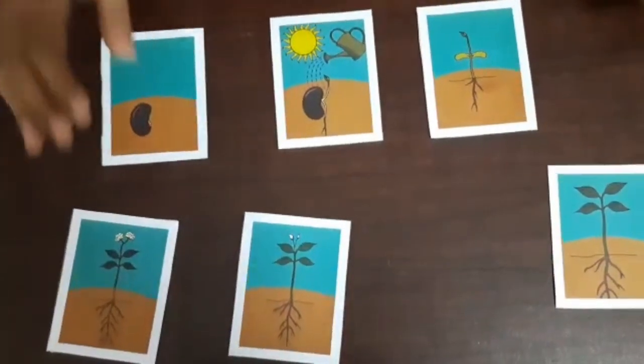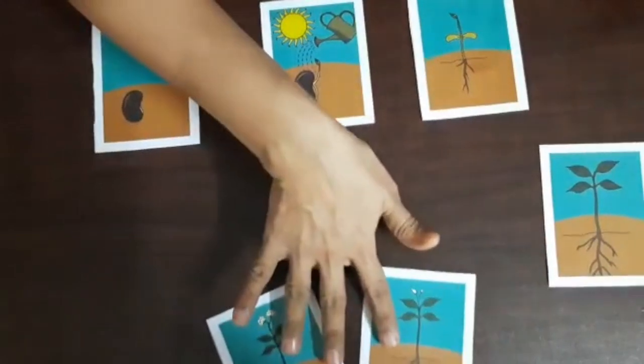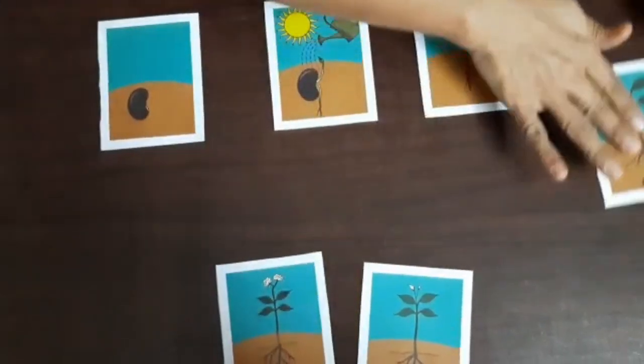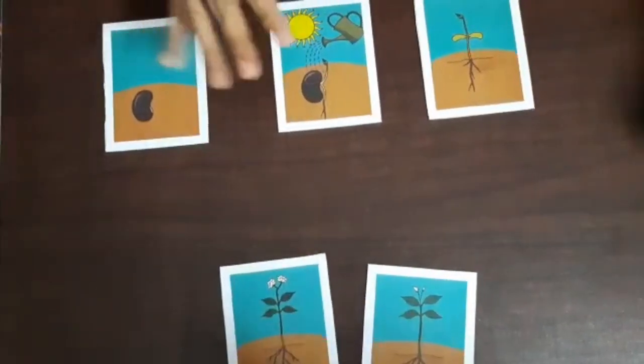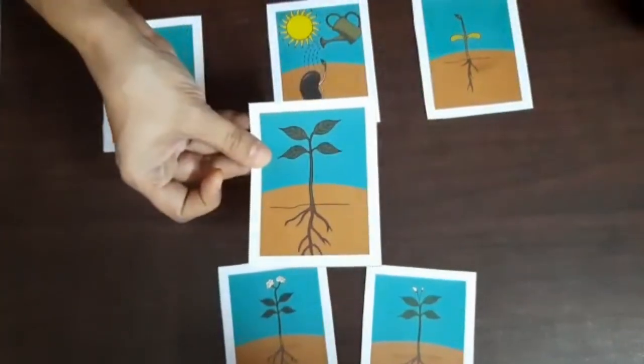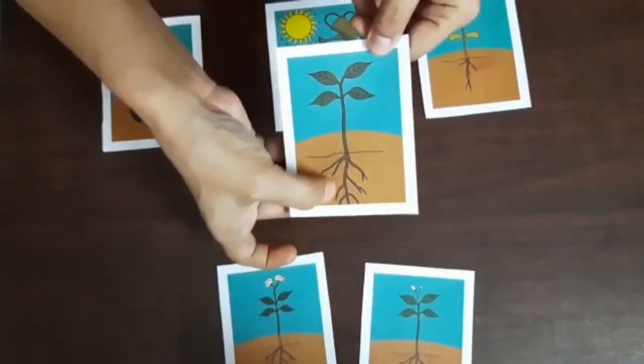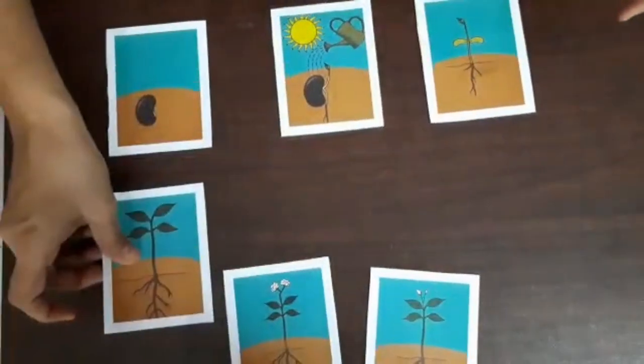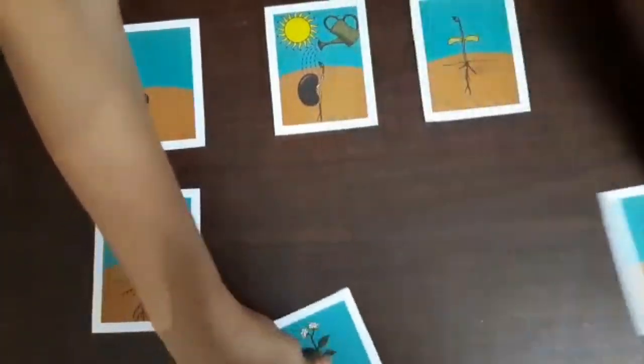Now what can be the fourth one? Yes. See, this is number four. You can see a plant and you can see roots also in the soil. So this is the fourth step.